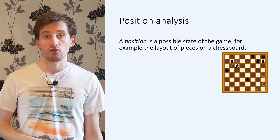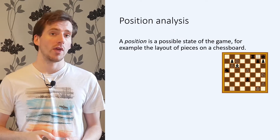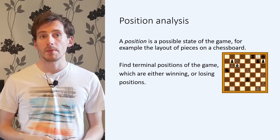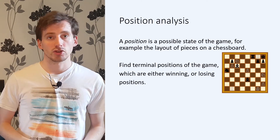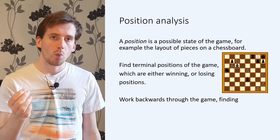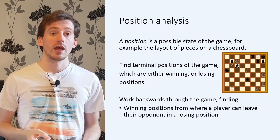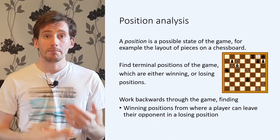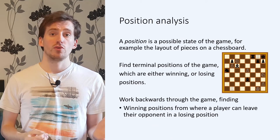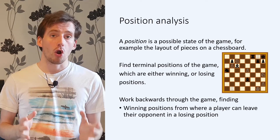Suppose player one has a winning strategy in a game. Then there will be some positions from which either player one can win on their next turn, or player two can lose on their next turn. We call these winning or losing positions respectively. Suppose there are some losing positions — we can then work backwards through the game. If there is a position from which player one can move to put their opponent in one of those losing positions, then we call that position a winning position and the move a winning move. Working backwards again, if there is a position from which player two can only move to leave player one in one of those winning positions, then player two will lose from that position on their next turn.